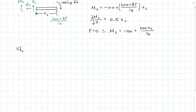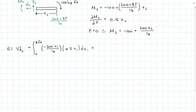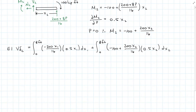The vertical deflection at C, with EI moved to the other side, equals the integral from zero to eight feet of (minus 200·X1/16) times 0.5·X1 dX1, plus the integral from zero to eight feet of (minus 100 plus 200·X2/16) times 0.5·X2 dX2. The vertical deflection at C equals negative 1600 kip-foot cubed over EI. The negative answer means it is actually acting upward, opposite to the assumed downward direction.